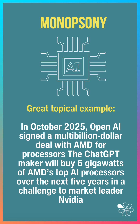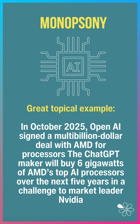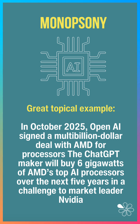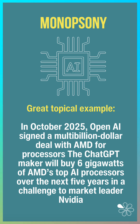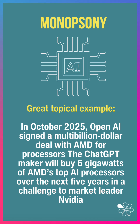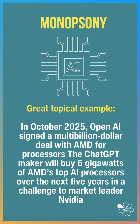And a really good topical example happened in October 2025. OpenAI announced and signed a multi-billion dollar deal with AMD for processors. The ChatGPT maker would buy six gigawatts of AMD's top AI processors over the next five years, in a challenge to market leader NVIDIA. That buying power may well have influenced the price that OpenAI pays for their processors over the next five years.